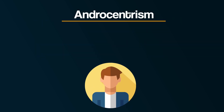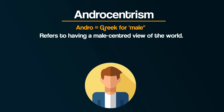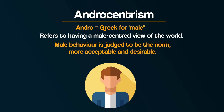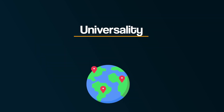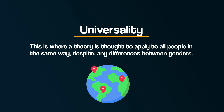The next key term is androcentrism. The word 'andro' comes from the Greek for male. So to be androcentric means to have a male-centred view of the world, where male behaviour is judged to be the norm, more acceptable and desirable. And finally, universality — this is where a theory is thought to apply to all people in the same way, despite any differences between genders.